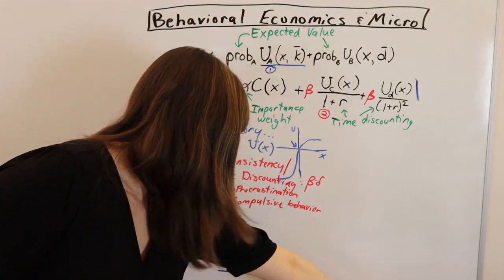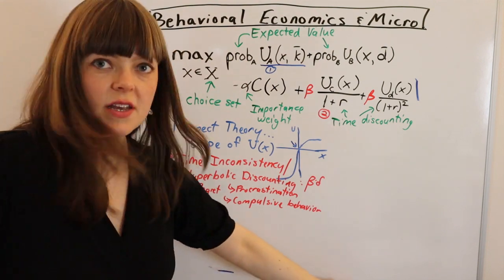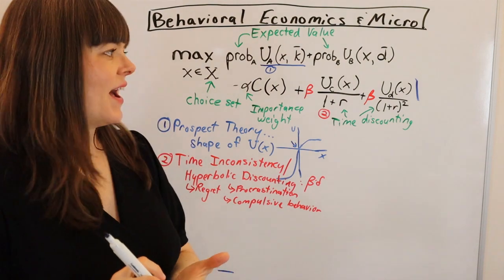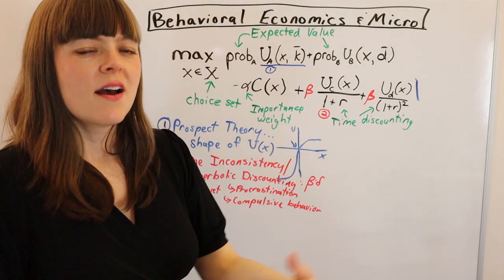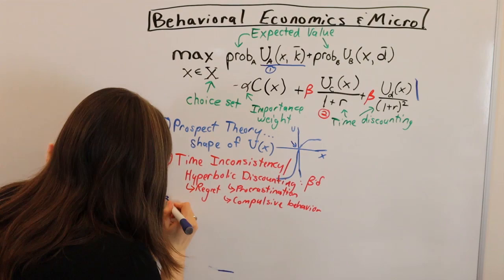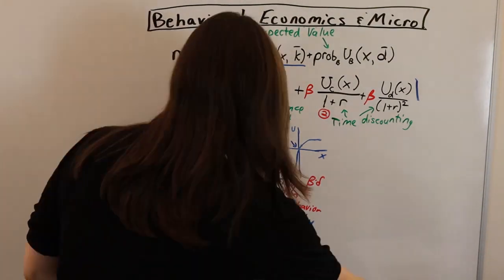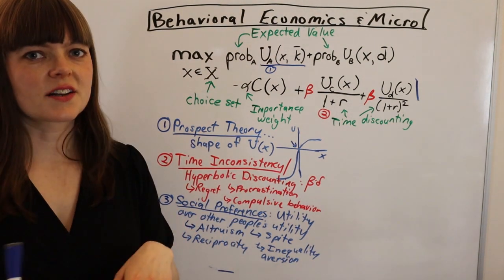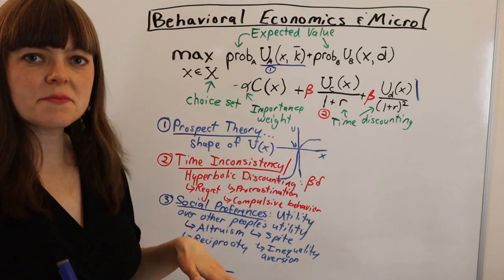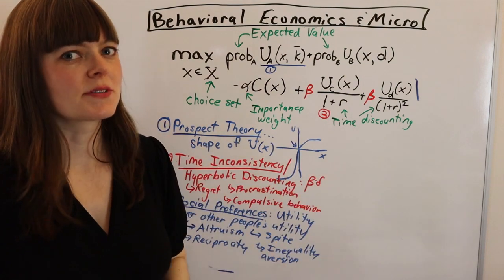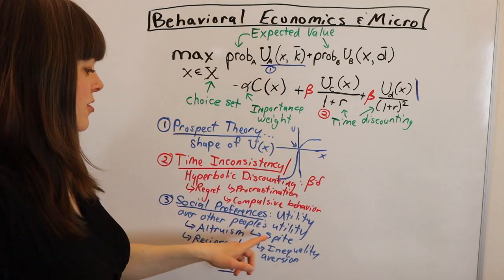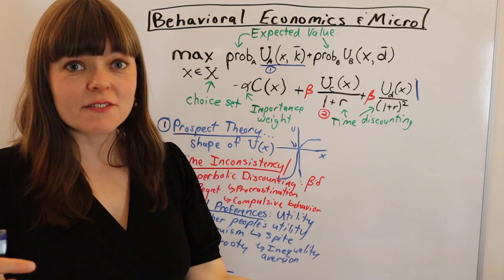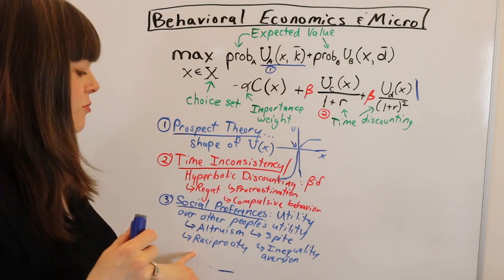Now the next thing I'd like to talk about is social preferences. So behavioral economics adds social preferences, the fact that we care about other people's utility. Social preferences includes things like altruism, that's where you get positive utility for other people's positive utility. It includes spite, which is where you actually get positive utility from other people's negative utility. It includes reciprocity, the fact that a lot of times you feel altruistic towards people who are nice to you and you feel spite toward people who are mean to you.